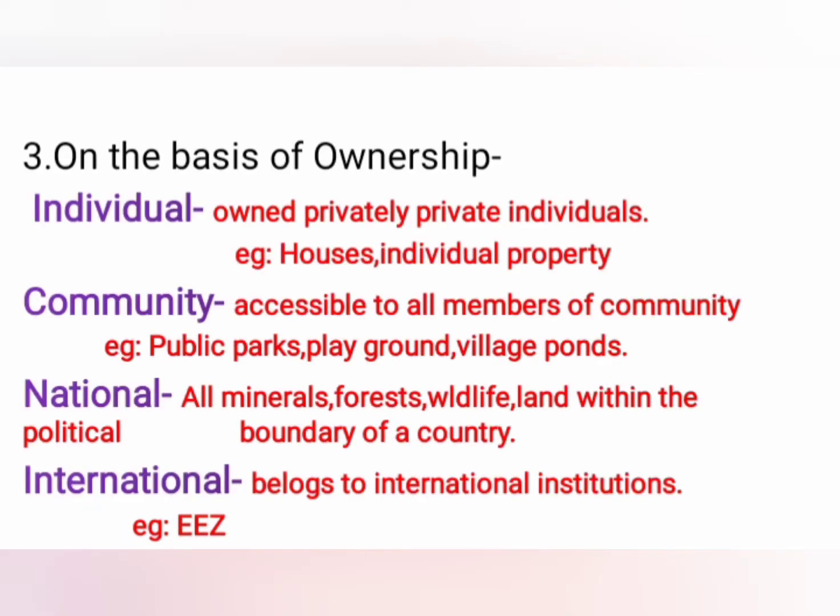The third classification is on the basis of ownership. Resources can be divided into four. The first is individual resources — resources owned privately by individuals. That means house plots, land ownership, ownership of ponds, wells, etc. For example, your house is owned by your father, mother or anyone else — it is owned by a private individual, so it is called an individual resource.